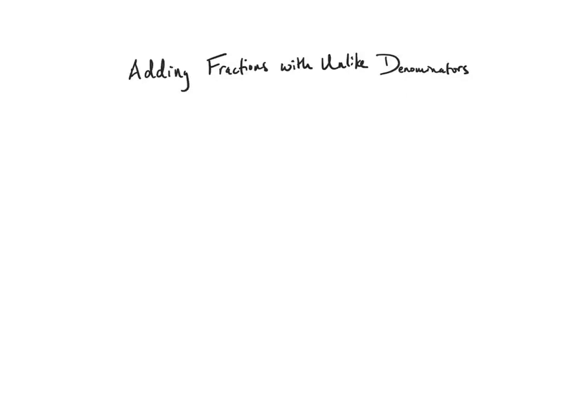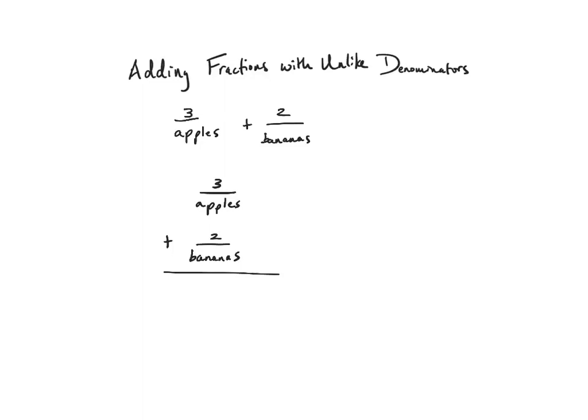In this video I'm going to show you how to add fractions with unlike denominators. I'm going to start by doing a problem which may seem rather silly: three apples plus two bananas. Anytime I'm adding or subtracting fractions I like to write my problems vertically. I've written this to look like a fraction because the denominator tells you the name of that fraction. Apples and bananas are both fruit, so I'm going to rename them as both fruit.